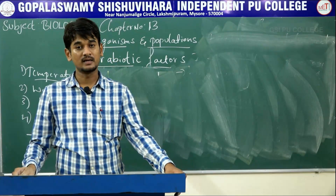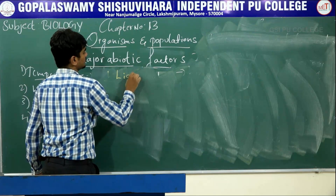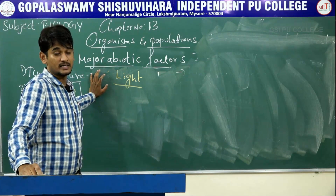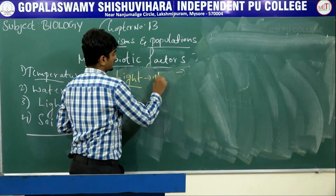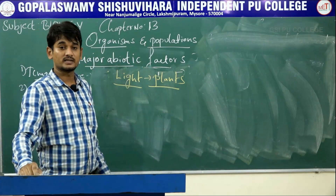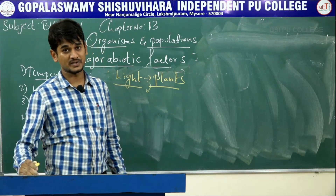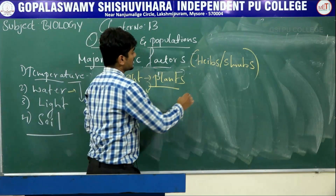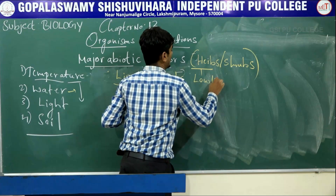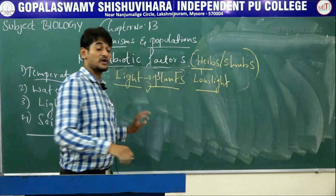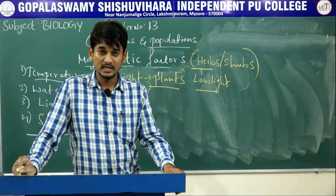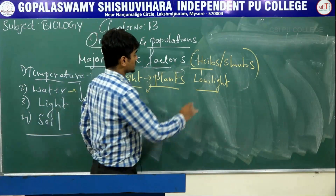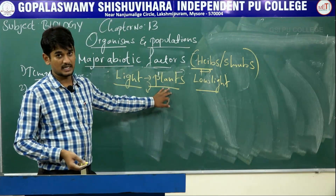The next major abiotic factor is light. Plants need light to perform the photosynthesis function. Many small plant species — herbs and shrubs — are adapted to photosynthesize optimally under low light conditions, because they are overshadowed by tall canopied trees. In this situation, herbs and shrubs are adapted to photosynthesize optimally under low light.